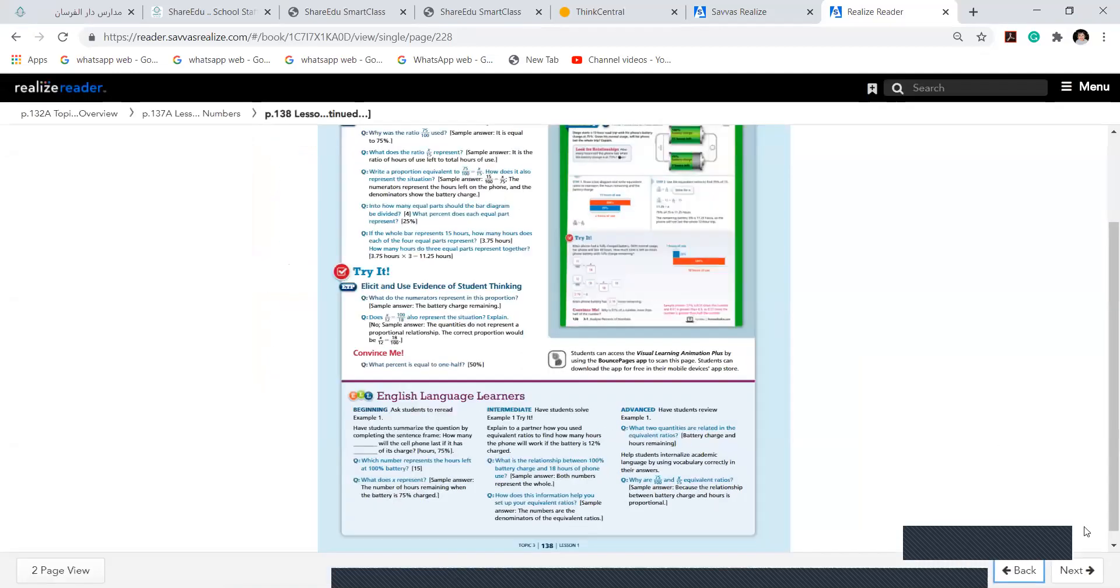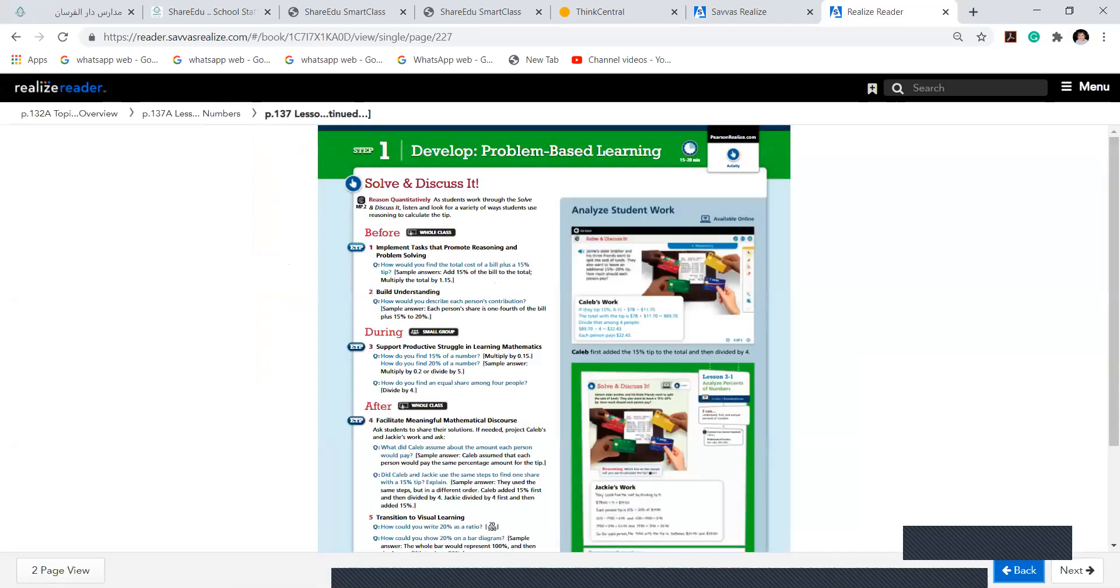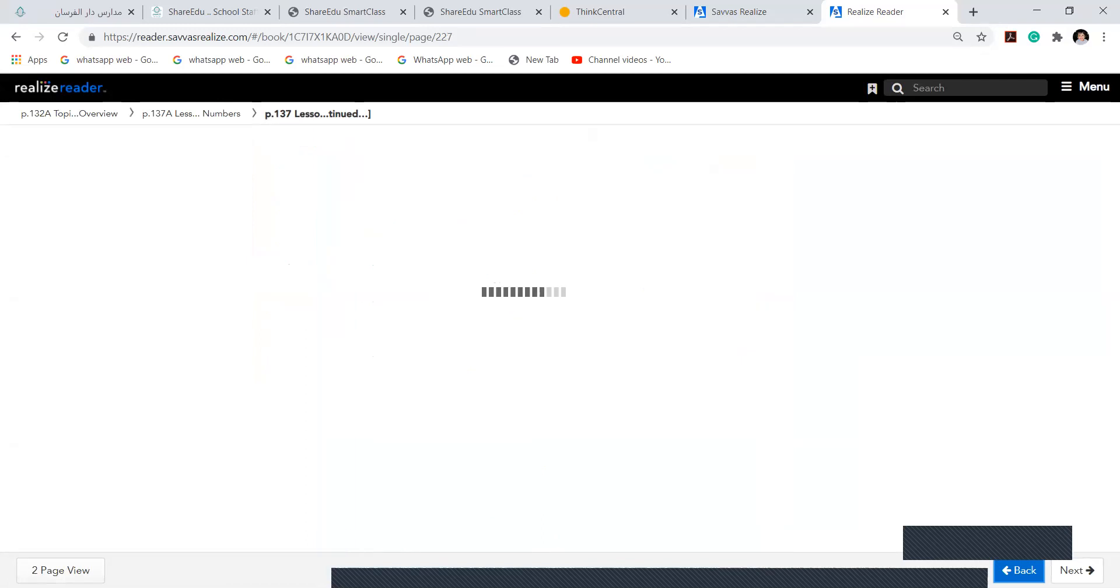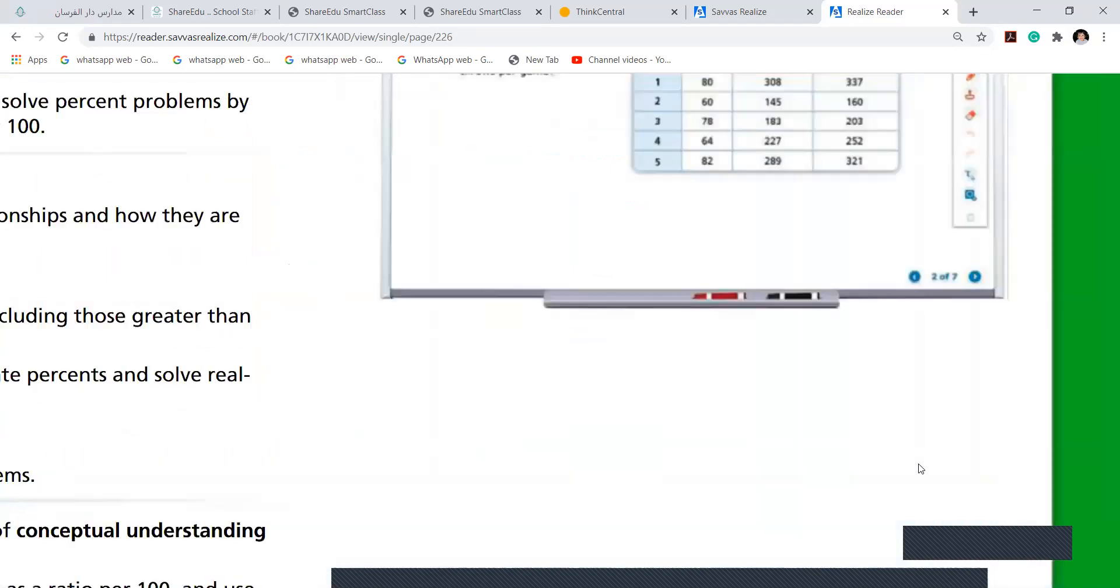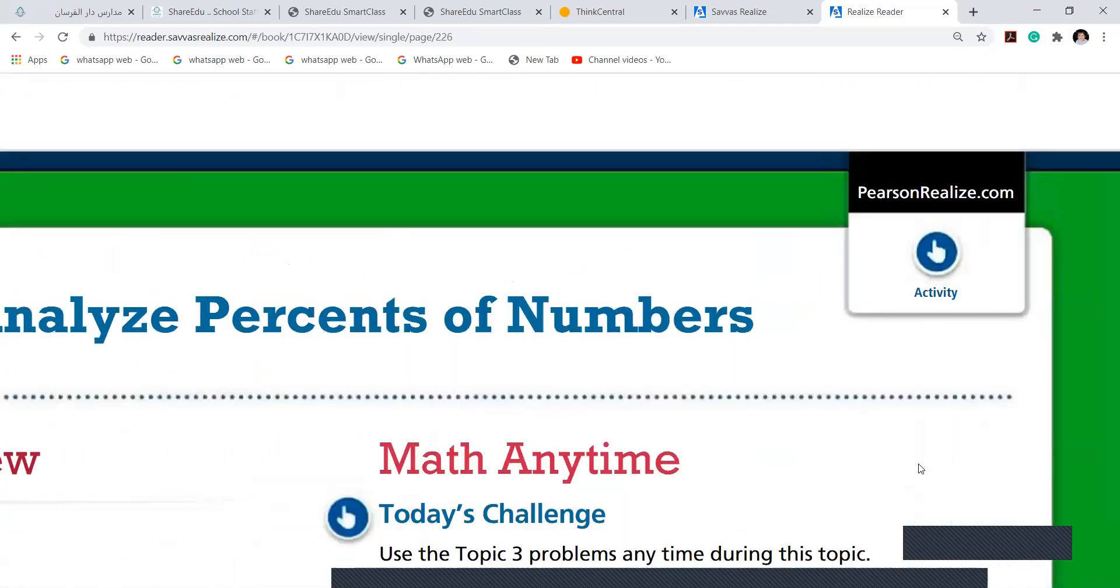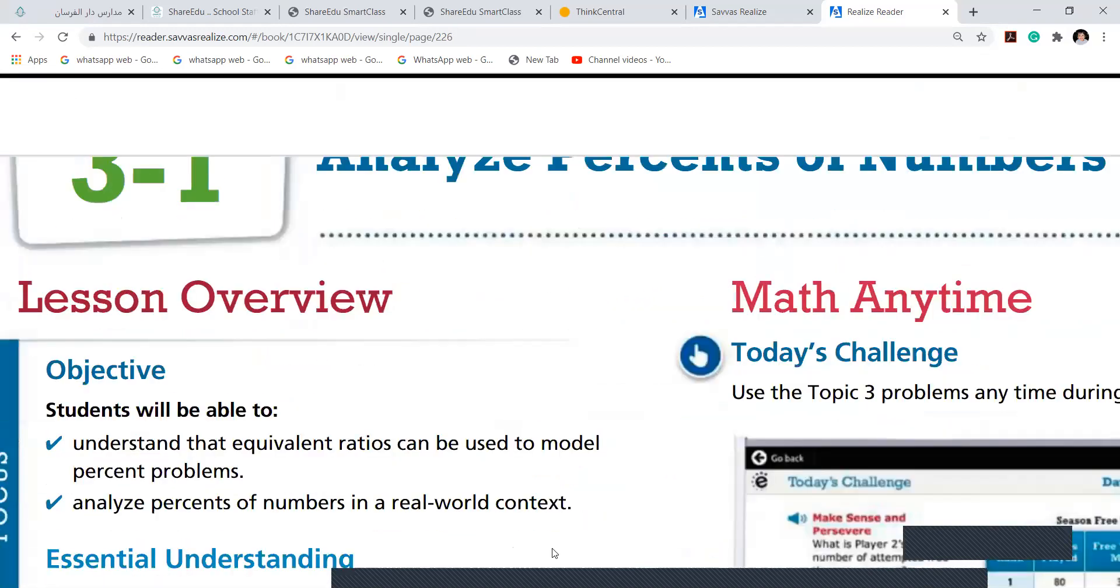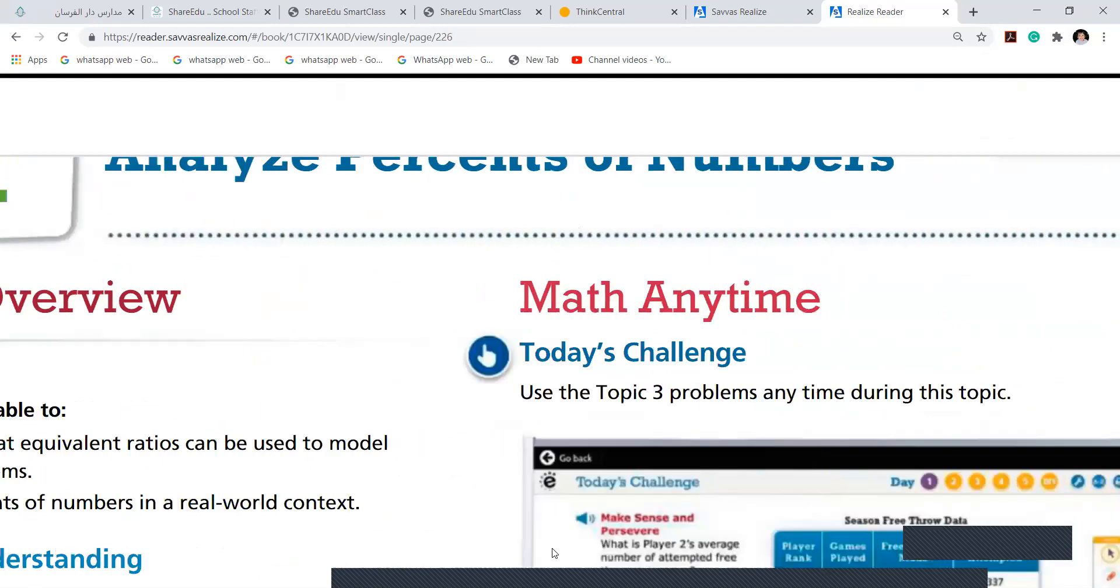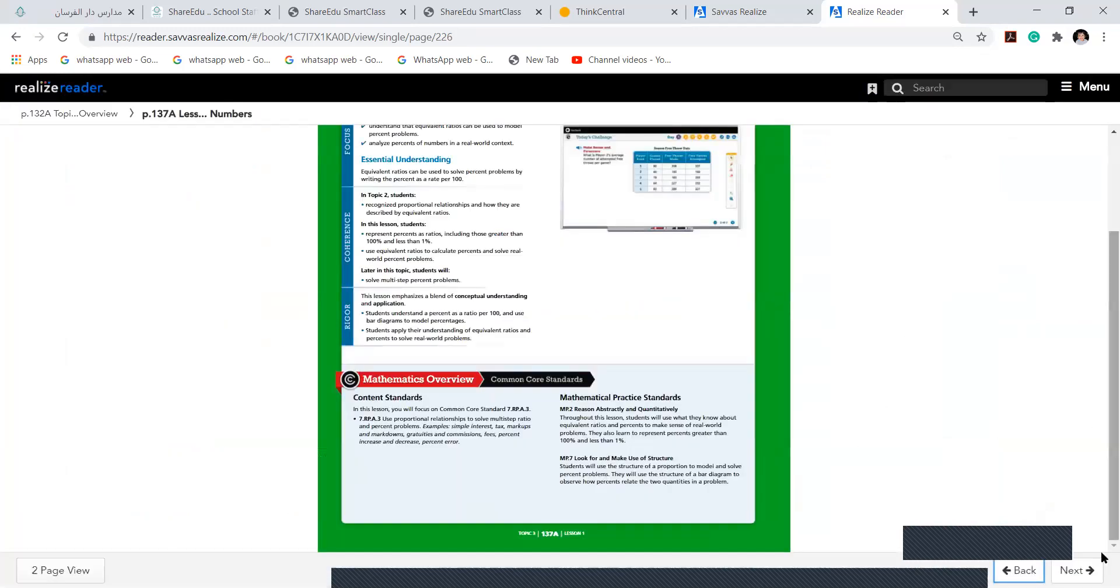Okay, good. What is the name of the lesson? First tell me what actually we will learn in unit 3. The name of the lesson is percent. The main thing you have to learn is your percentage. We are analyzing the percent of numbers. And at the end of the lesson, we'll understand the equivalent ratios can be used to know the percentage of the problem.